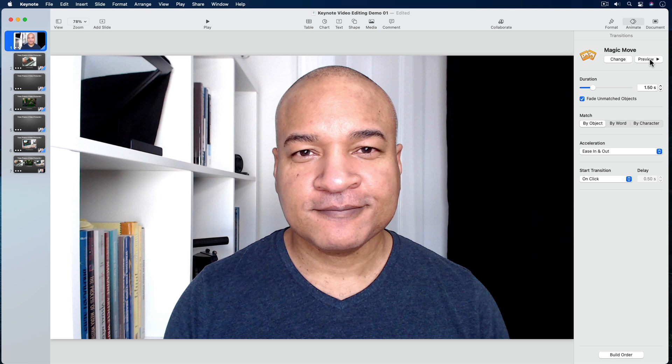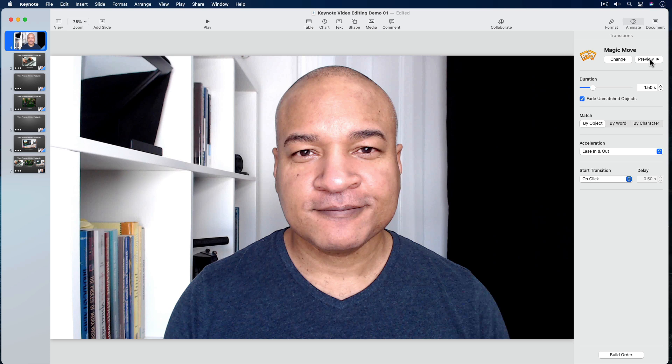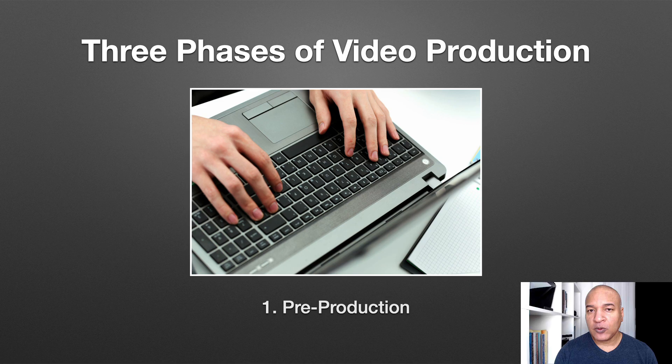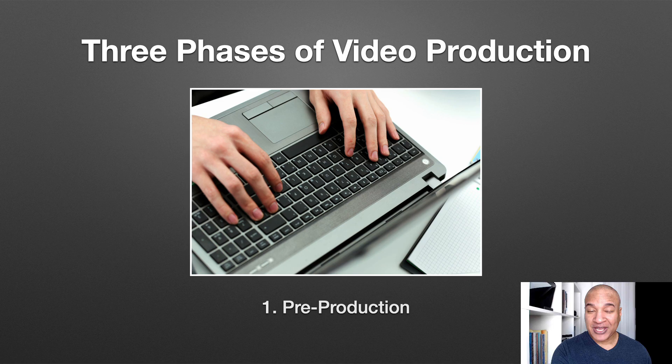Now that my talking head video is set up on all of my slides, let's see how this whole thing comes together using the Play Across Slides feature. I'm going to select the play button to play back my slideshow. Here's my full screen talking head video on the first slide playing automatically. At the right moment I'll hit the forward arrow key and we'll transition to the next slide. Notice my talking head video continues to play across the slides independently — that's what the Play Across Slides feature does. It's like having a separate video track for your slideshow. I'll continue stepping through my slideshow using my talking head video narration as a guide.